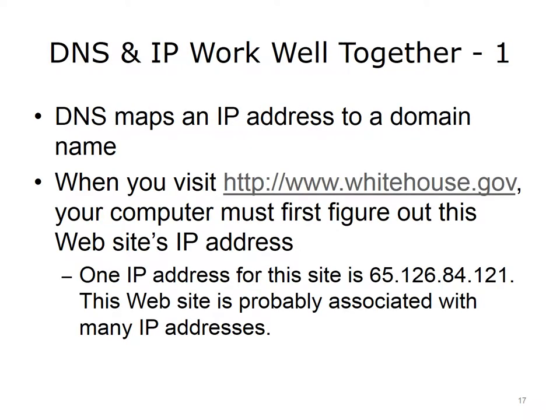It is important to point out that each time a user navigates to a website using a browser, the computer must first determine the website's IP address. Therefore, navigating to www.whitehouse.gov requires the browser to first resolve that name to an IP address, and then, and only then, is the browser able to display the webpage. One IP address for the White House appears on the slide. This website is probably associated with many IP addresses, one of which appears on the slide.